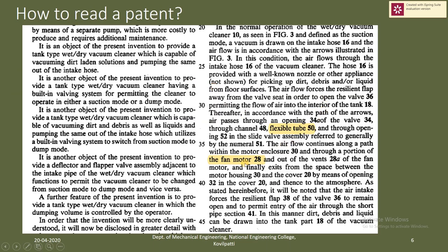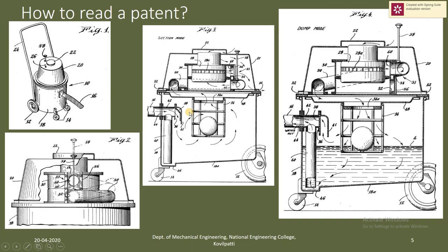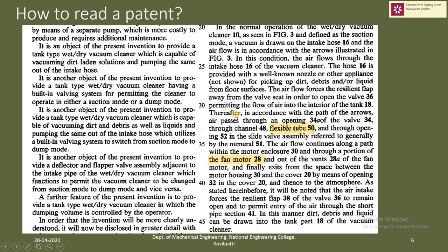All the numbers you see in the drawings are cited inside the description. For example, number 28 refers to a specific part — by reading the description you can find that the fan motor is number 28, meaning the motor that drives the fan. Similarly, number 50 refers to a flexible tube, which you can also visually identify by its circular cross-section.